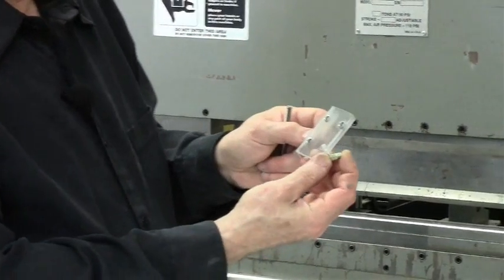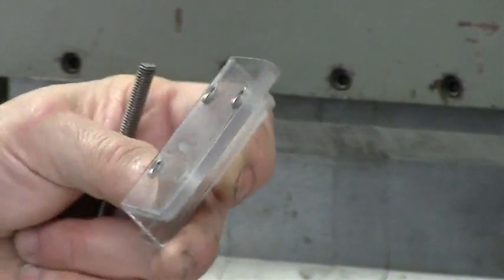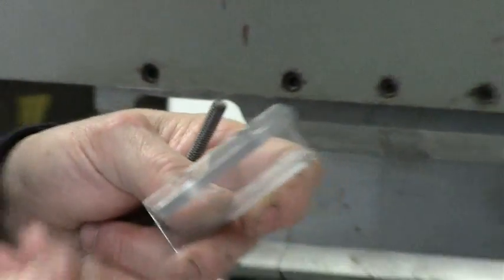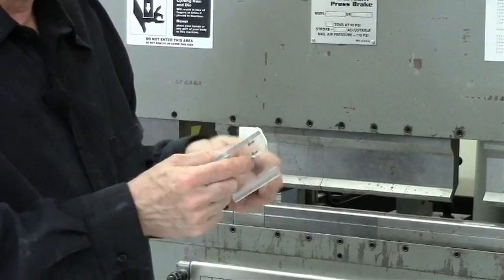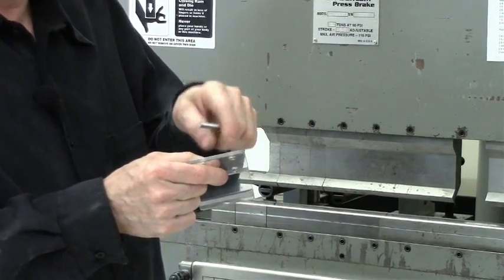What you have to do is use either inserts - these are threaded inserts that are set like pop rivets - or use helicoids. If you don't have room for the inserts, you can use helicoids.